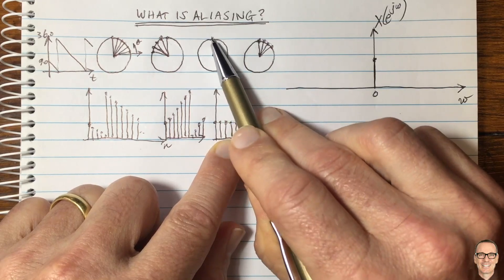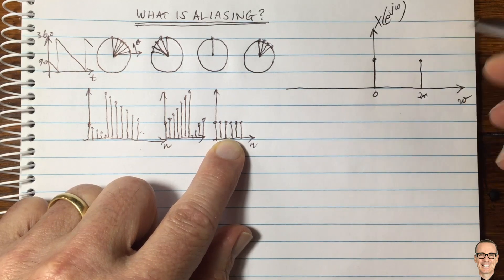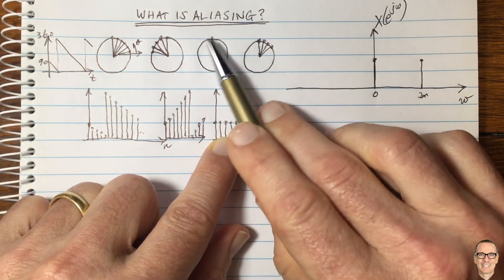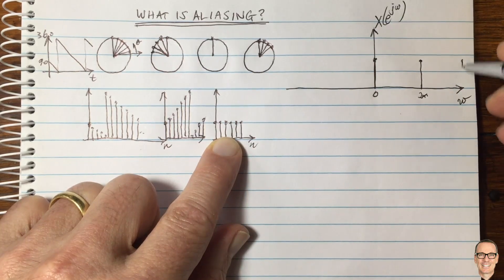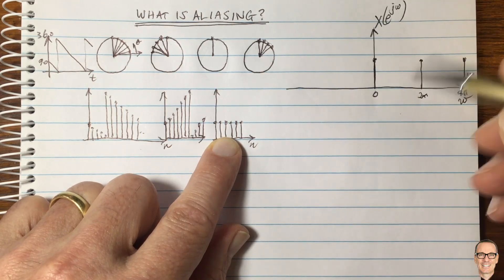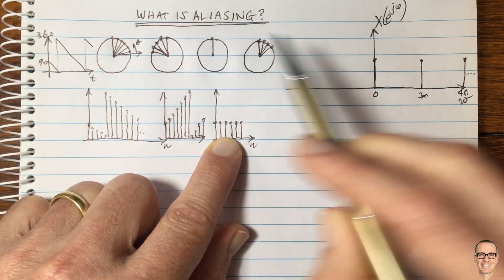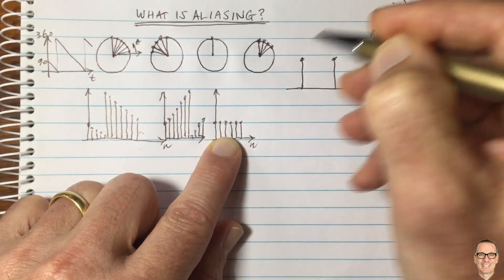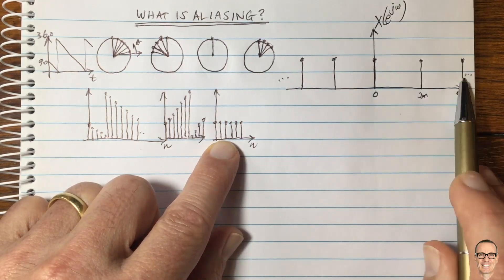This waveform represents a wheel traveling at zero speed, but it also represents a wheel traveling at 2π, and of course also at 4π, and so on. It also represents a wheel traveling in reverse by 2π, and by 4π, and all the other negative ones. So from our sampled waveform, we get replicas in the frequency domain.